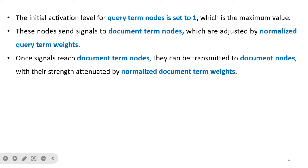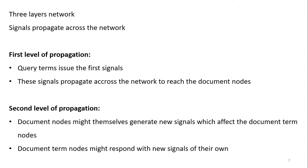The initial activation level for a query term node is set to 1, which is the maximum value. These nodes send signals to document term nodes, which are adjusted by normalized query term weights. Once signals reach document term nodes, they can transmit to document nodes, and their strength is attenuated by normalized document term weights in this three-layer network.